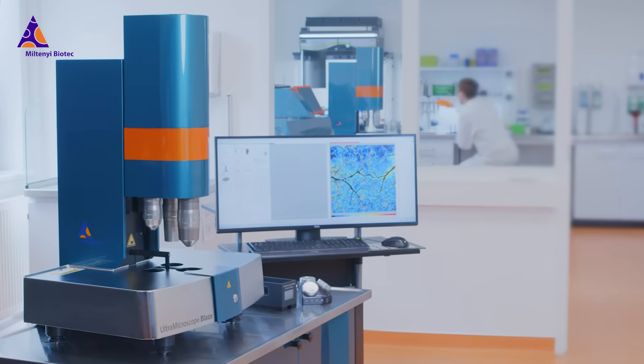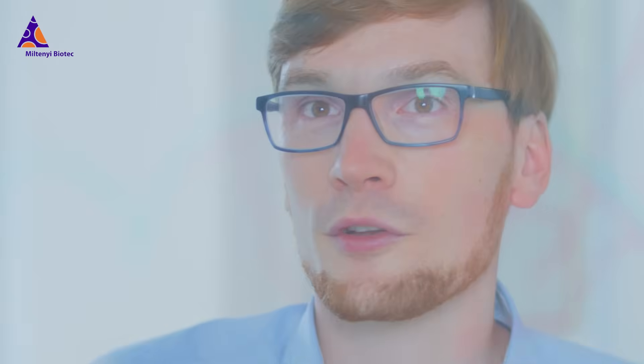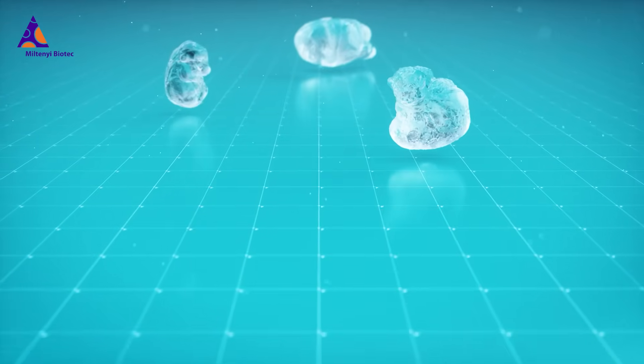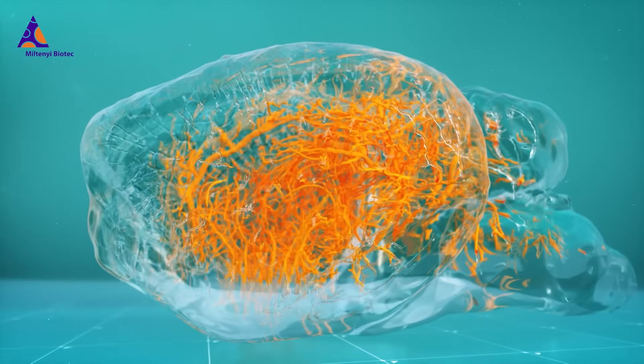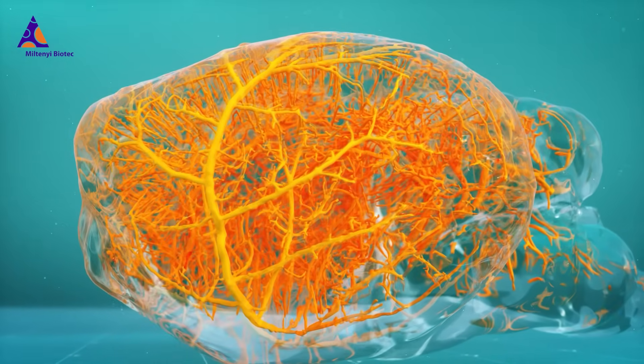Even if you're not an expert, the Ultramicroscope Blaze Light Sheet Imaging System lets you easily create detailed 3D images of entire rodent organs, or even a whole mouse, without sectioning and with minimal training and hands-on time.